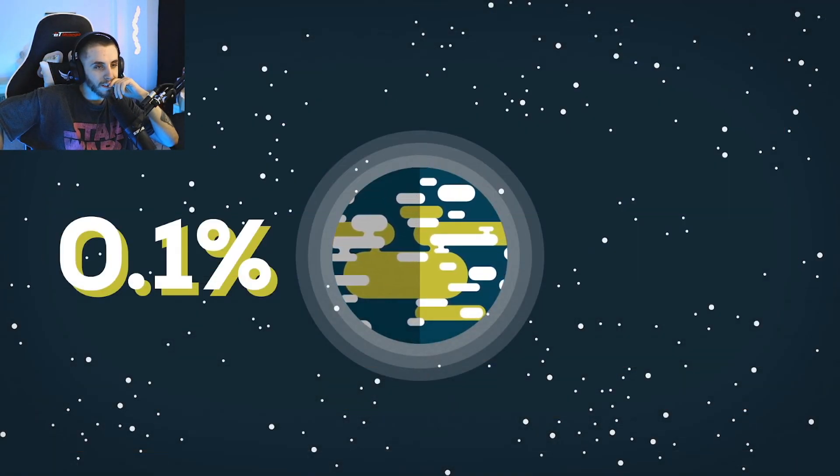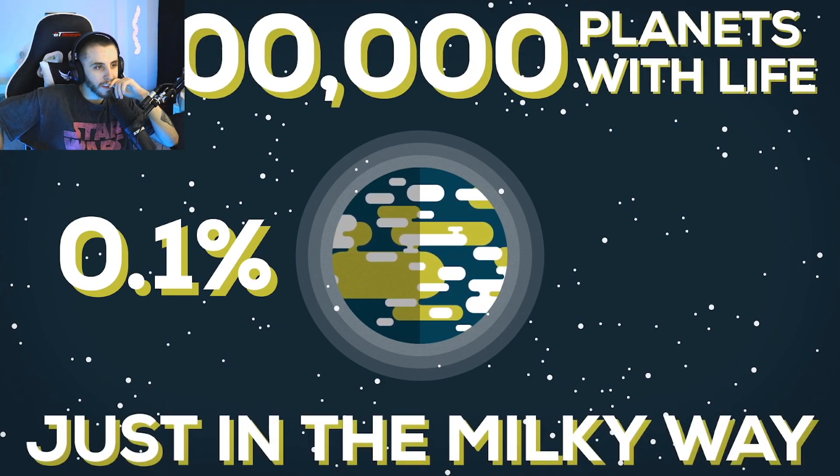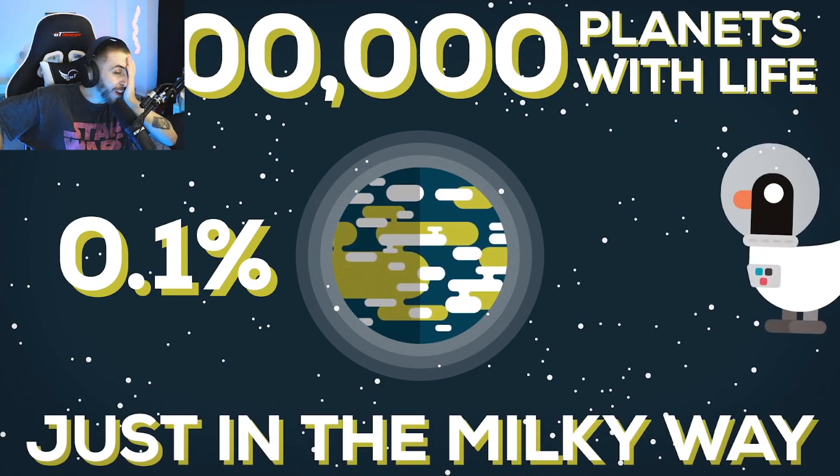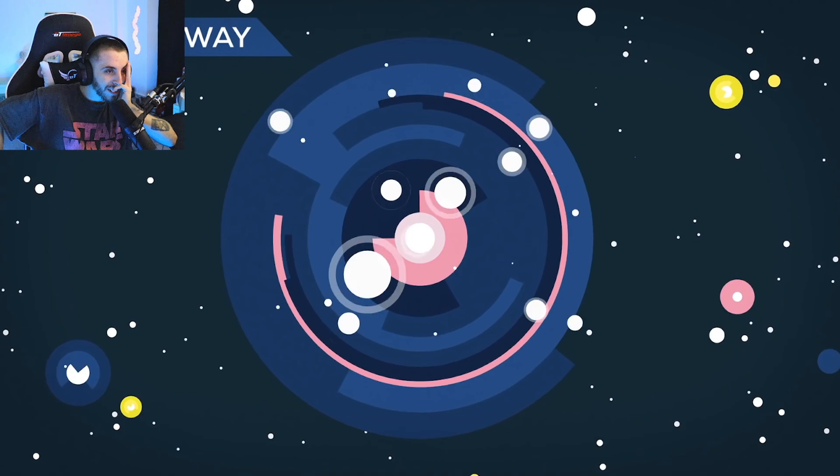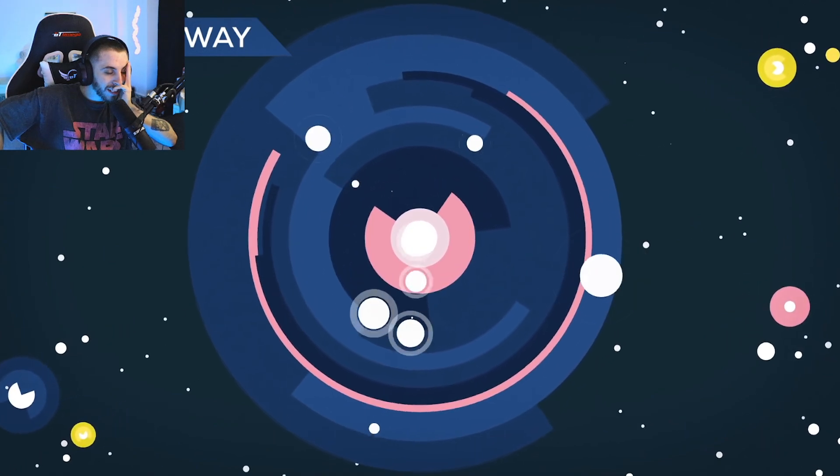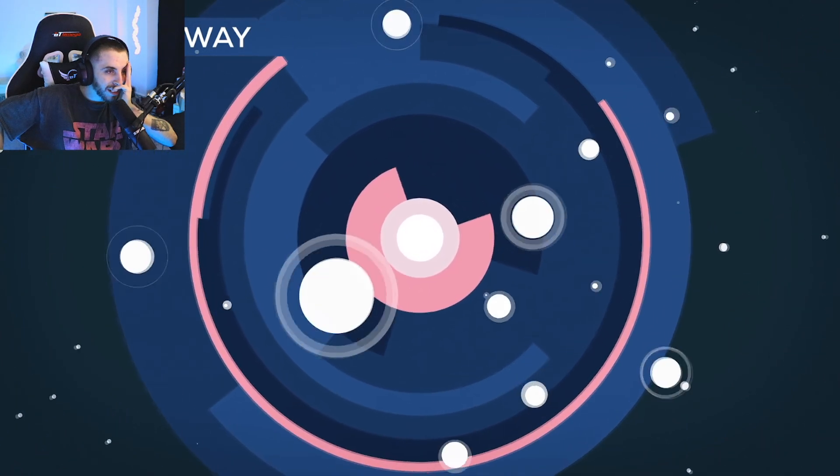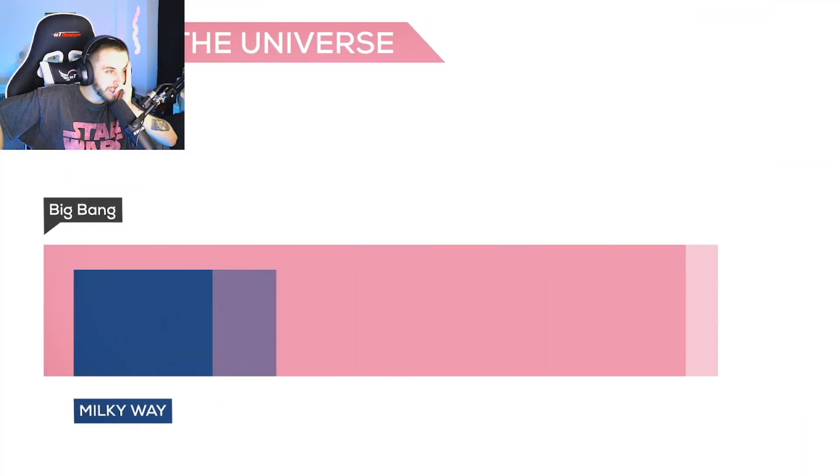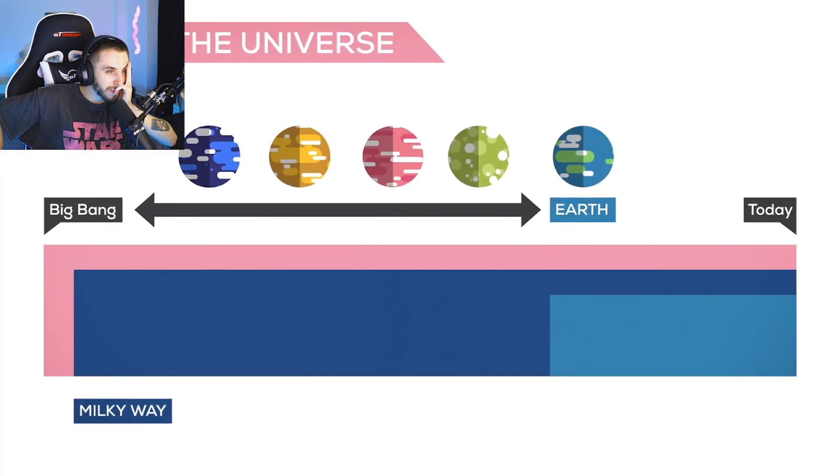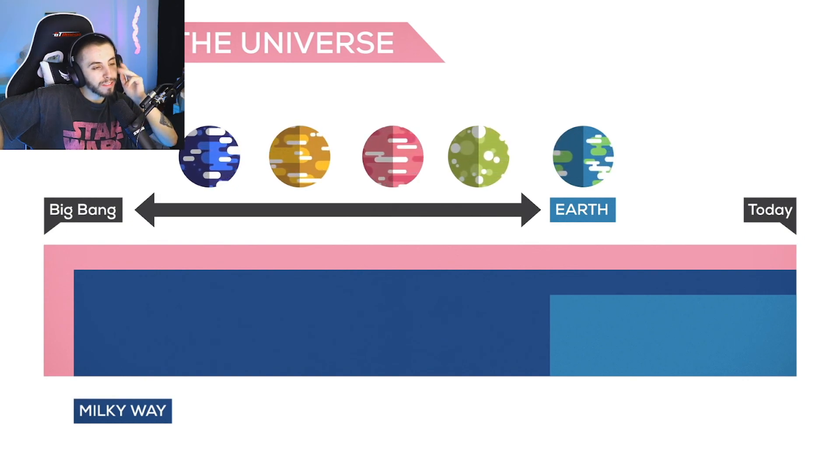If only 0.1 percent of those planets harbored life, there would be one million planets with life in the Milky Way. Wait, there's more. The Milky Way is about 13 billion years old. In the beginning it would not have been a good place for life because things exploded a lot, but after one to two billion years the first habitable planets were born. Earth is only four billion years old, so there have probably been trillions of chances for life to develop on other planets in the past.